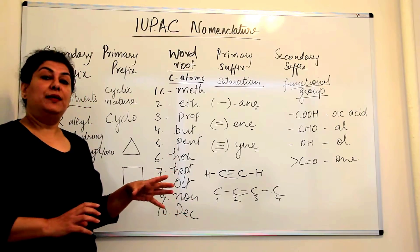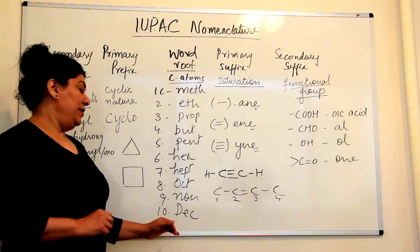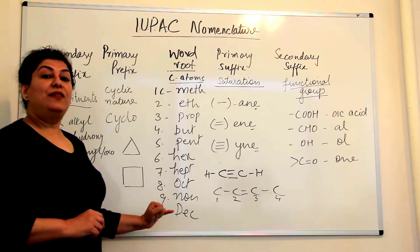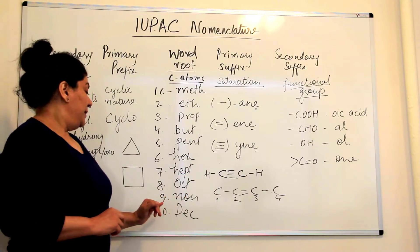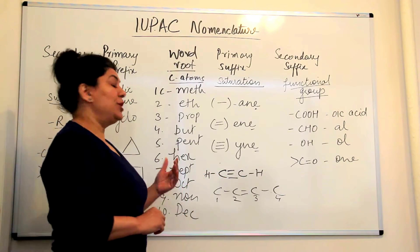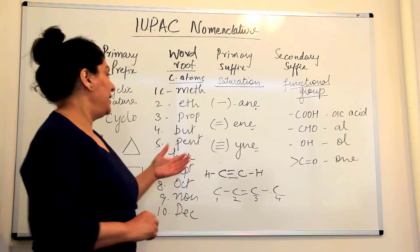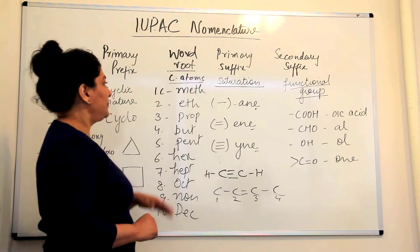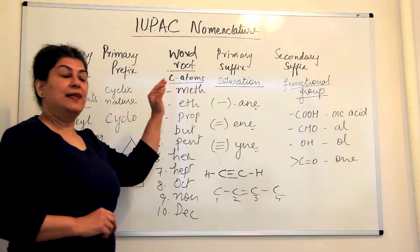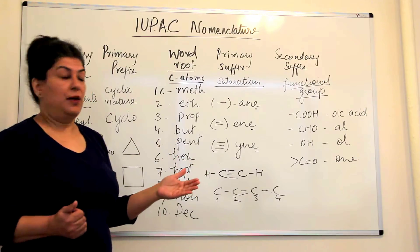If the hydrocarbon has 11 carbon atoms, we would call it 'undec.' Twelve would be 'dodec,' thirteen would be 'tridec,' fourteen would be 'tetradec,' then 'pentadec,' 'hexadec,' and so on. So the word root tells us the number of carbon atoms in the compound.